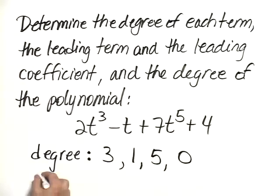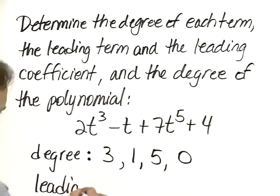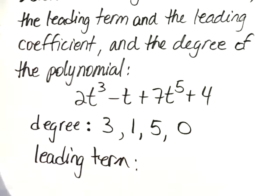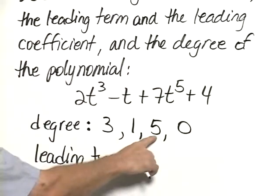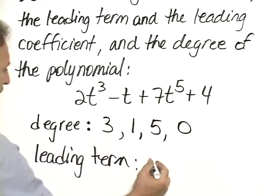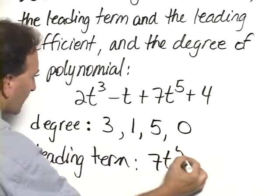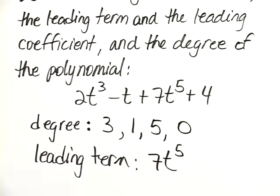Now the leading term would be the term with the greatest degree. Well, this is the greatest degree, it belongs to this term, so the leading term is 7t to the power of 5.